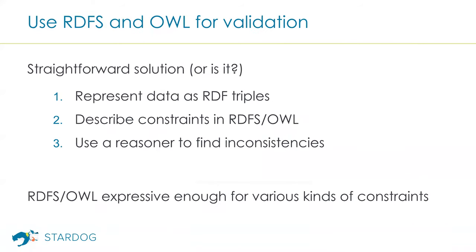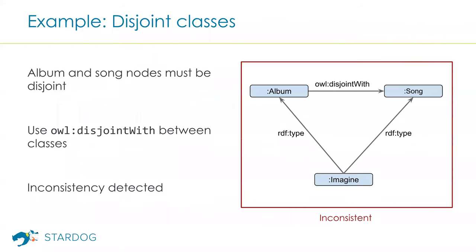Since in the RDF stack we have schema languages like RDFS and OWL, the web ontology language standardized by W3C, it seems attractive to use these languages for validation purposes. One can be inclined to define constraints using RDFS and/or OWL and use a reasoner to detect inconsistencies. There are clear semantics defined in these standards about what an inconsistency is, and you can find various tools and reasoners, including Stardog, that implement these semantics.